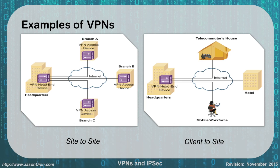The second example is our client-to-site, where a mobile user or telecommuter connects back to headquarters, and from there they'll be able to go out to the internet if needed. The big benefit here is they can get access to headquarters resources as if they were sitting inside headquarters — they'll have access to the file shares, printers, and scanners even though they're not physically sitting there.